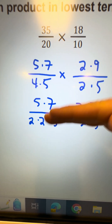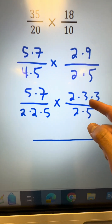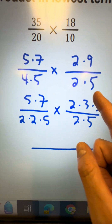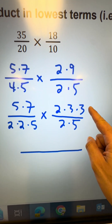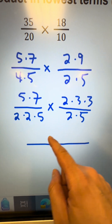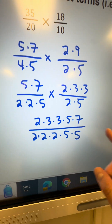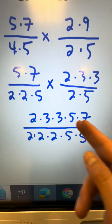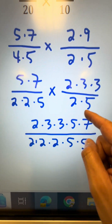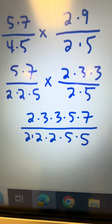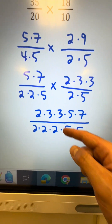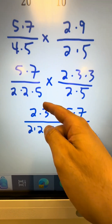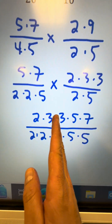At this point you can start looking for common factors between the numerator and denominator. One thing I like to do is reorganize this into one fraction, because when you multiply fractions you multiply all the numbers in the numerator together and all the numbers in the denominator together. I wrote it in least to greatest order — 2, 3, 3, 5, 7 on top and 2, 2, 2, 5, 5 on the bottom — because it makes it easier to organize and spot common factors without missing any.